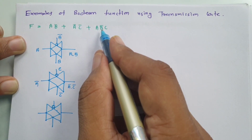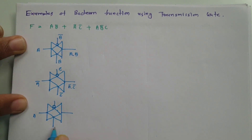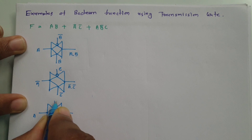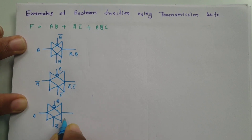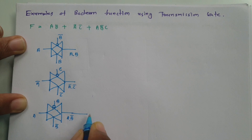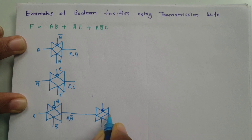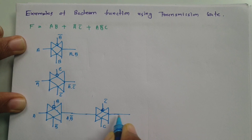To form a·b̄·c, I am giving input a and the control input is b̄, so the bubble terminal should be b. This results in a·b̄. Now to complete a·b̄·c, one more transmission gate is connected in series on this line. The control input for this second gate is c, and the bubble terminal is c̄. So the output will be a·b̄·c.